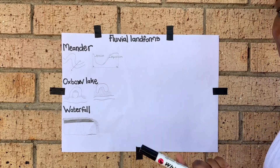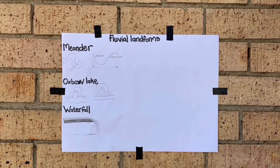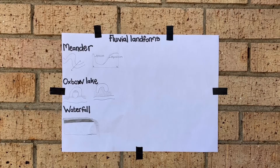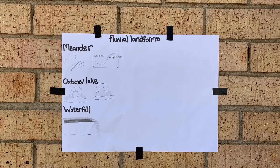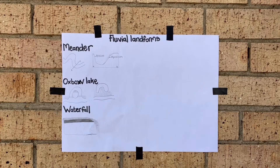A meander is commonly found on the lower course of a river. You know there's an upper course, a middle course, and a lower course — a meander will be found in the lower course because the gradient there is more gentle. That could be an exam question: in which course is the meander found? The meander is found on the lower course of a river.